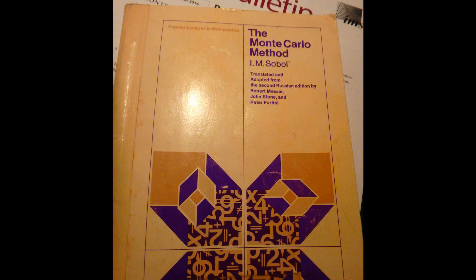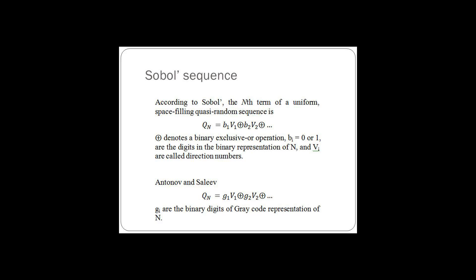In finance, other implementations are available as Fortran 77 or Fortran 90 routines in the Numerical Recipes collection of software. A free, open-source implementation in up to 1111 dimensions, based on the Joe and Kuo initialization numbers, is available in C and Julia. A different free, open-source implementation is available for C++, Fortran 90, MATLAB, and Python.